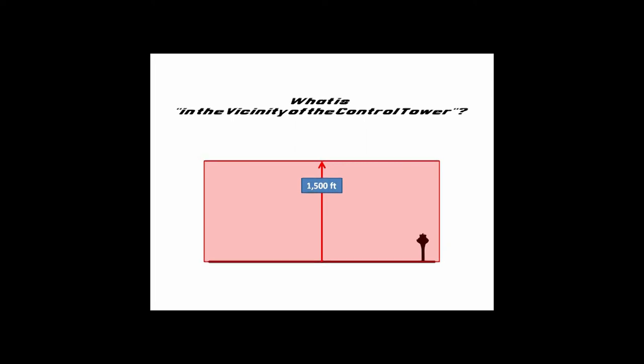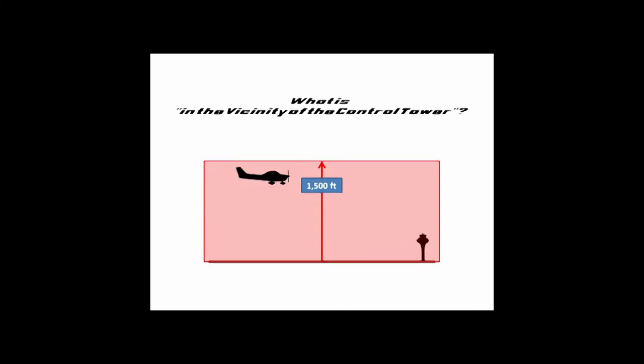In general, we're talking roughly 1,500 feet above the surface of the airport. Again, an aircraft taking off, departing the airport, an aircraft landing, or an aircraft just transiting — these aircraft would be talking to the control tower. Let's move on and have a look at the little skit I've prepared.